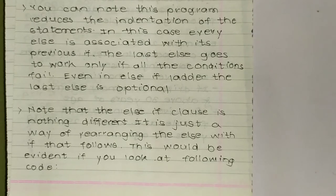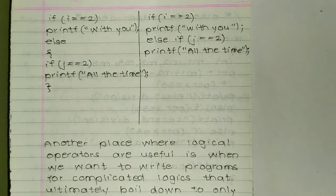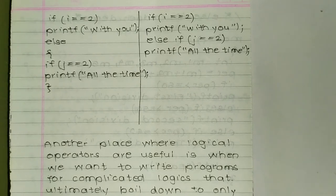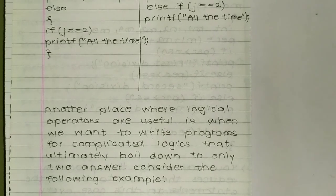Note that the else-if clause is nothing different — it is just a way of rearranging the else with the if that follows. This is evident if you look at the following code: the program on the left-hand side and right-hand side is the same, but the arrangement is different. For example, if i == 2, print 'with you,' else if j == 2.